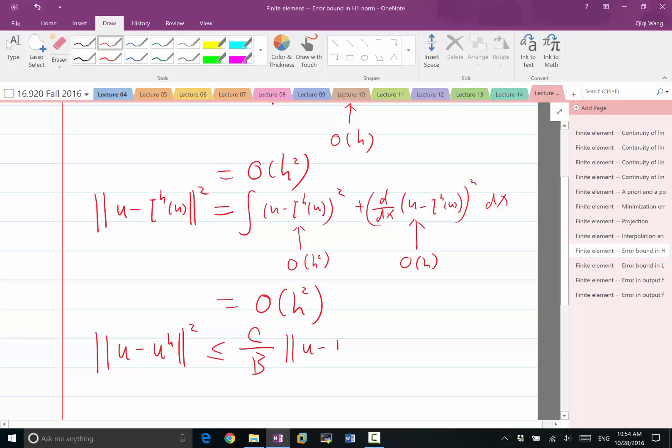And what I know is that U minus my finite element solution is less or equal to C over B times U minus any WH, and in this case I just substitute the WH with this interpolant. And so it is going to be less or equal to O H squared.